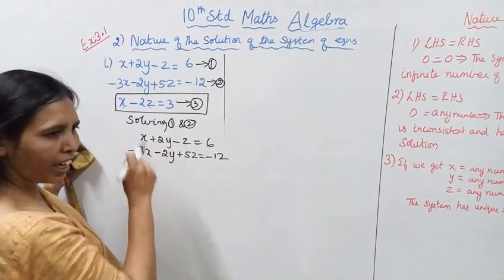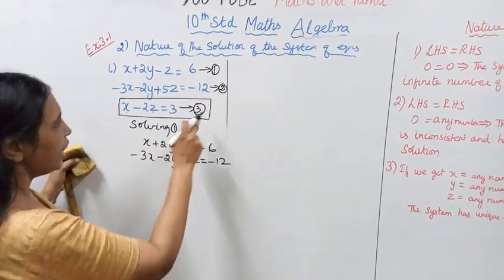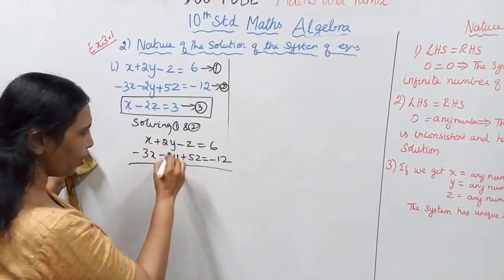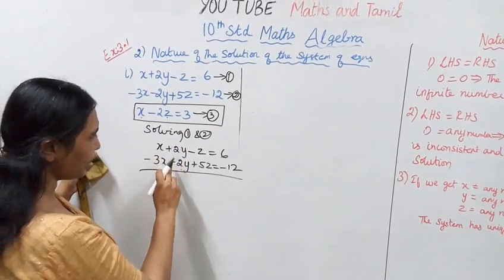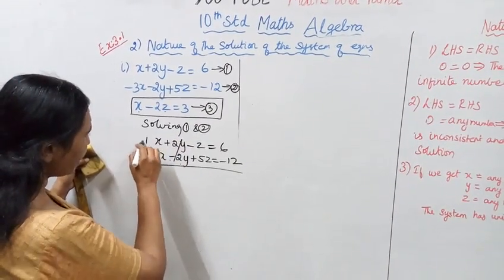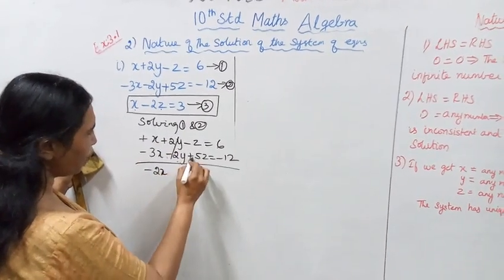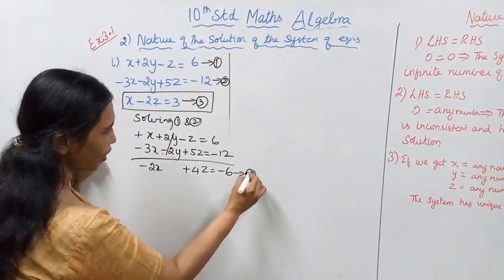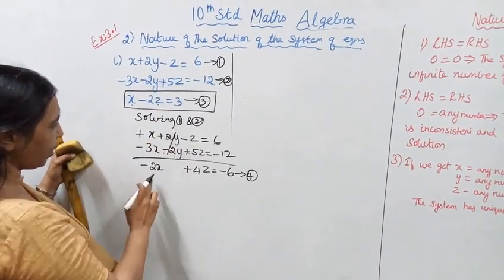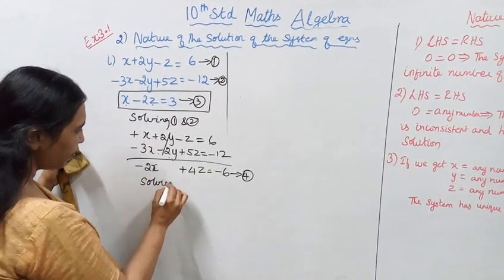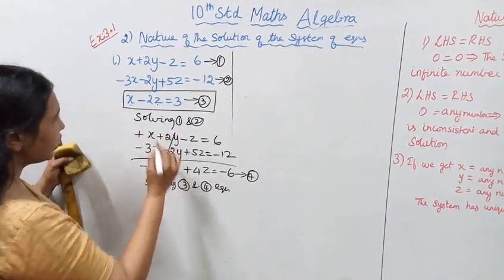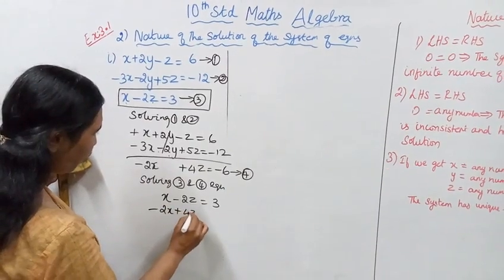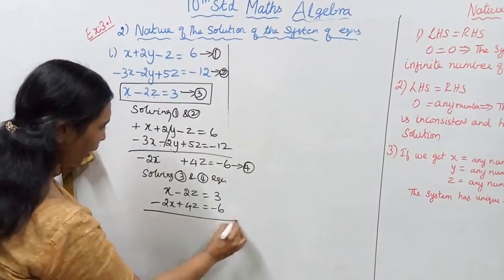Working through the elimination: combining the equations, we get minus 3x plus 1x equals minus 2x, plus yz, minus 1z plus 4z, and minus 12 plus 6 equals minus 6. Solving equations three and four: third equation gives x minus 2z equal to 3, and minus 2x plus 4z equal to minus 6.